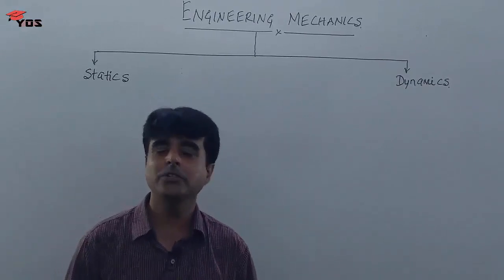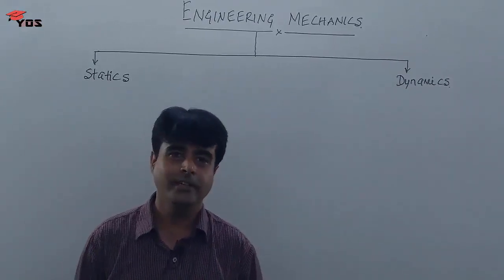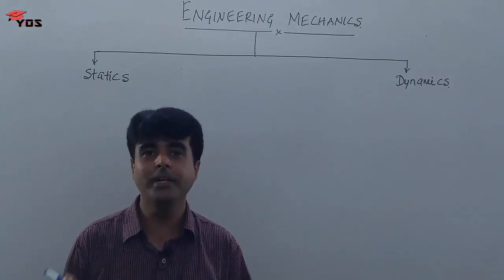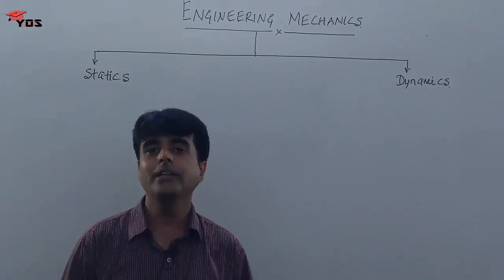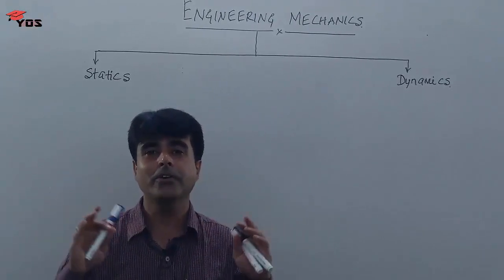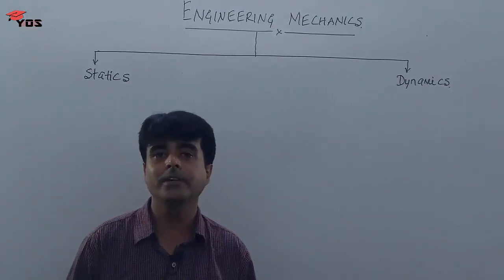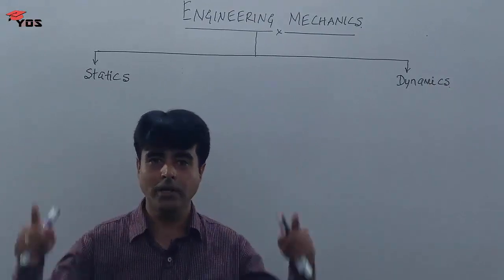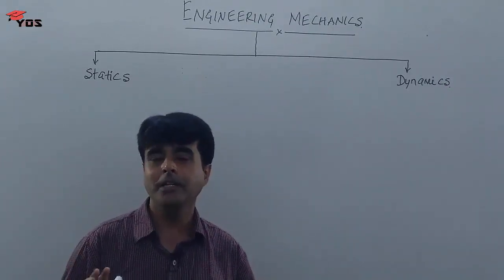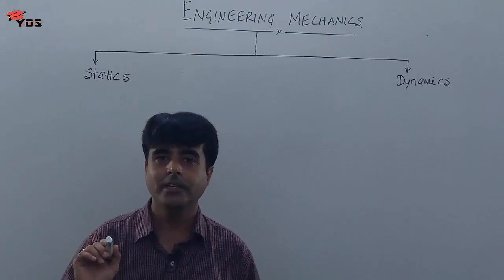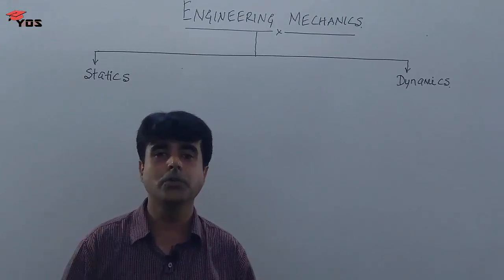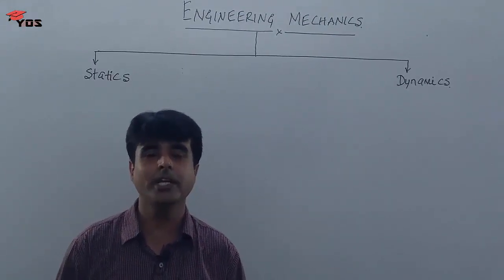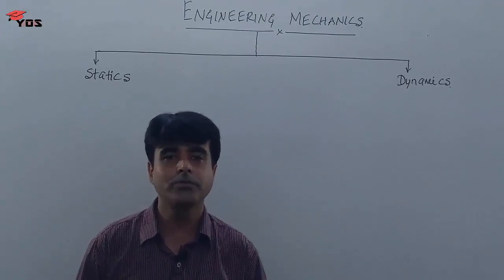If you take an example of civil engineering, their main project is to build a building. While building a building, they come across different structural components like beams and columns. In order to find reactions in those columns, you should know the basic principles of engineering mechanics.